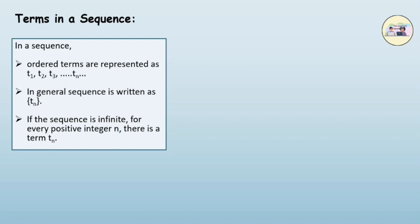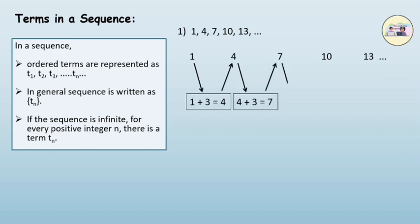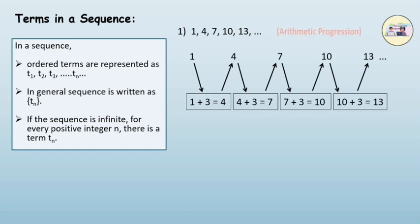Now let's find the relation in the following sequences: 1, 4, 7, 10, 13. The next term is obtained by adding a particular number to the previous number. Here we add 3 to the number. 1 plus 3 is 4, 4 plus 3 is 7, 7 plus 3 is 10, and 10 plus 3 is 13. This is known as arithmetic progression.